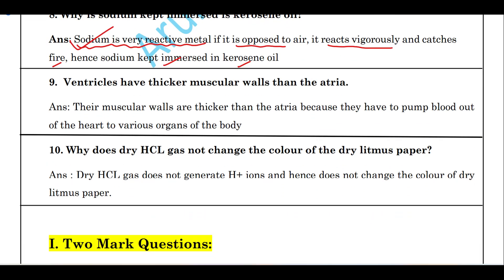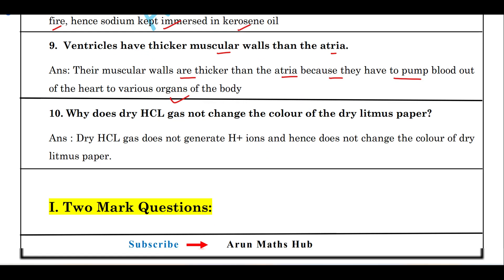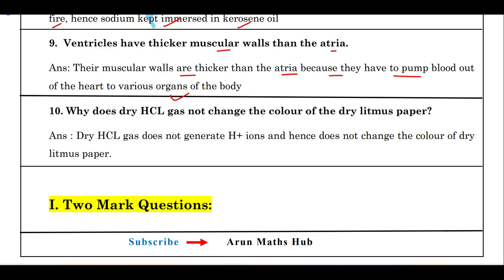Ventricles have thicker muscular walls than atria because they have to pump blood out of the heart to various organs of the body. Why does dry HCl gas not change the color of dry litmus paper? Dry HCl gas does not generate H⁺ ions. HCl produces H⁺ ions only in aqueous solution — that is, in water. Hence, dry HCl does not change the color of dry litmus paper.